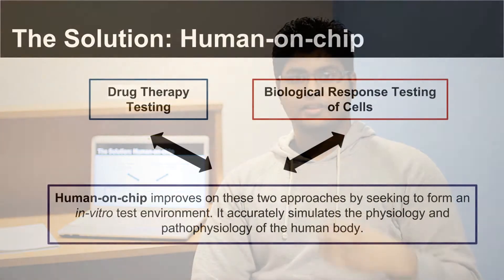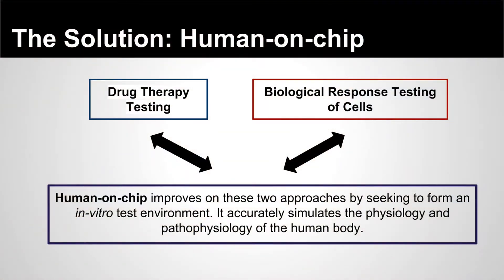The solution for these issues is a Human on Chip system. This novel method works by mimicking the body's physiological and pathophysiological environments, meaning that we can resolve the problems associated with both conventional testing methods in a more accurate way.